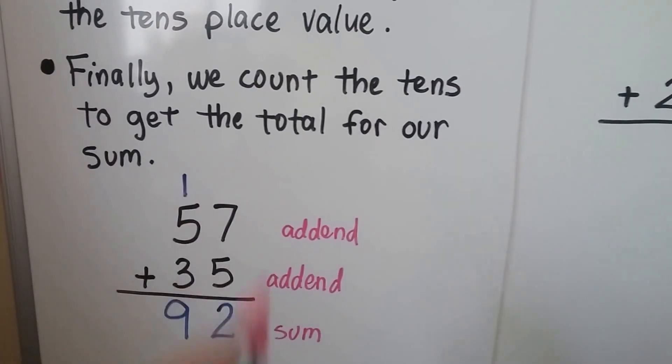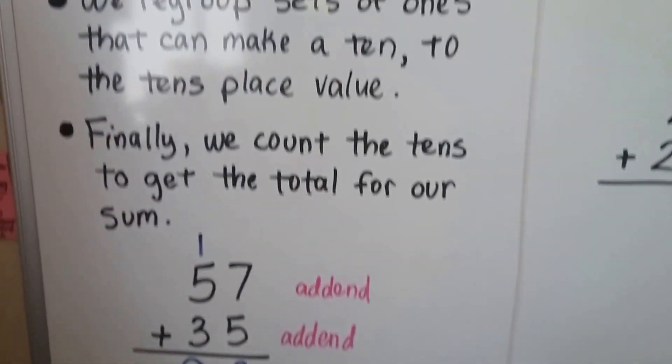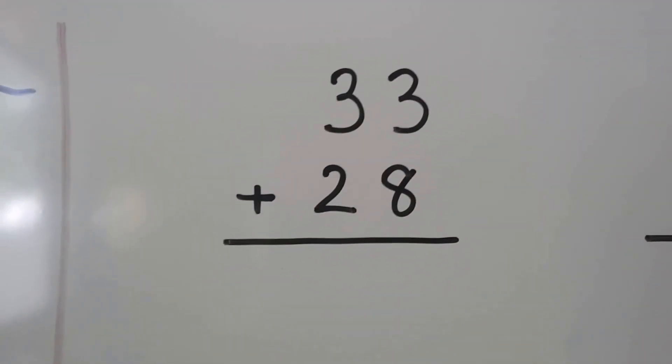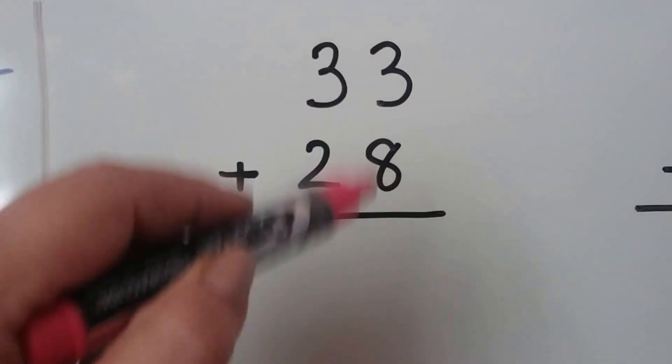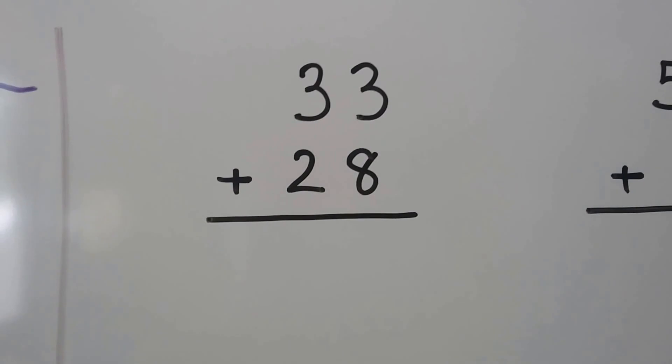So now we're not going to use the boxes. We're going to see if we can do this on our own without the box that shows the tens and the ones place value. Here we have 33 plus 28. We start with the ones place.